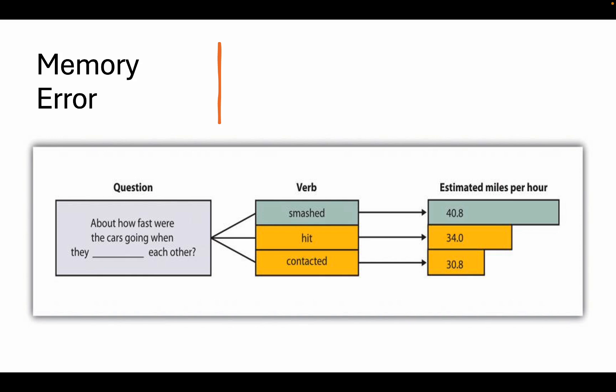The simple question of how fast were the cars going when they 'smashed' into one another provided almost a 10-mile-per-hour difference comparatively to the question of how fast were the cars going when they 'contacted' one another. So we like to think that our personal recollections of memories are very accurate, but it may not be the case — even a subtle change of words or verbs in a sentence and how they are asked can alter our recall.